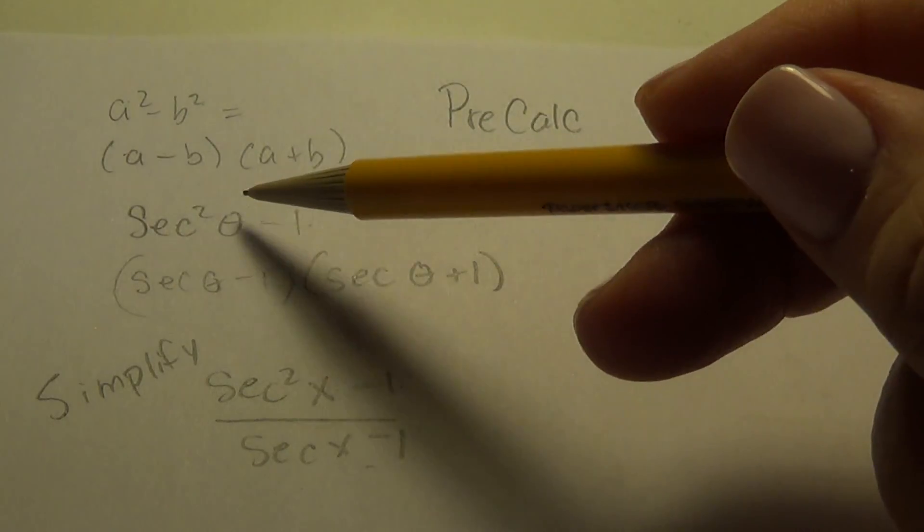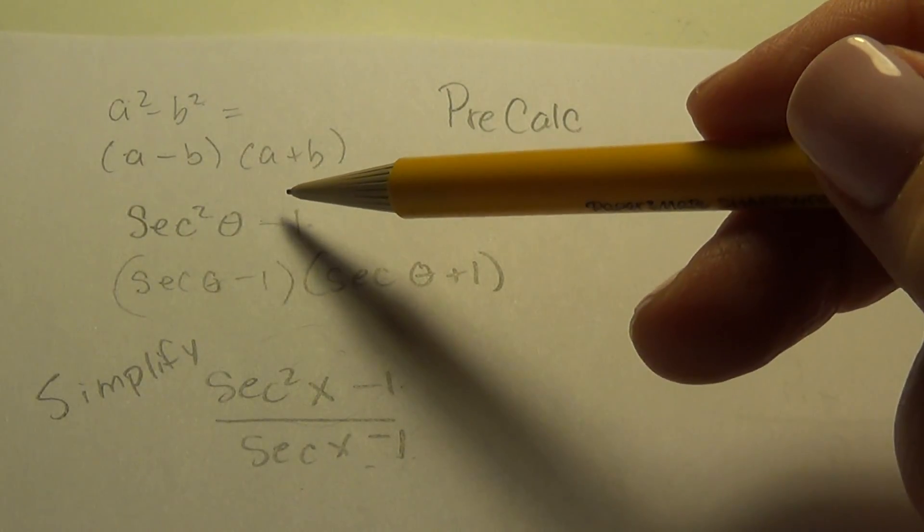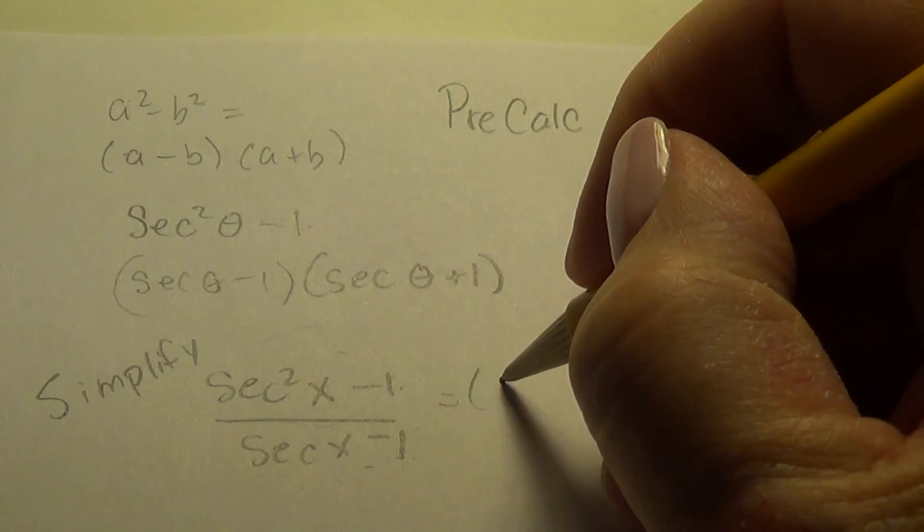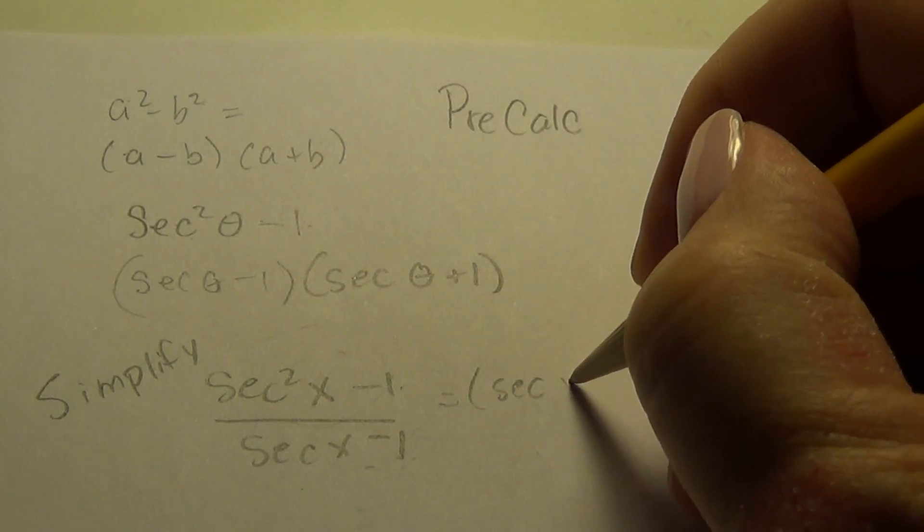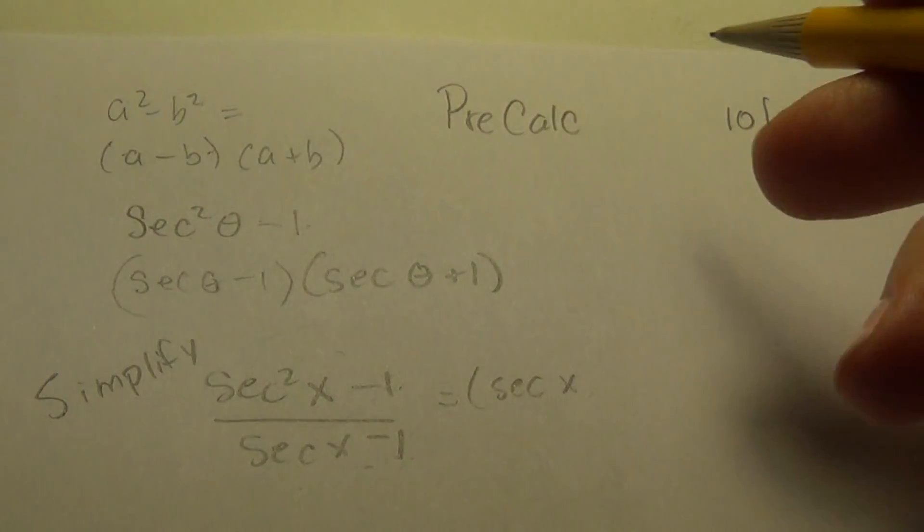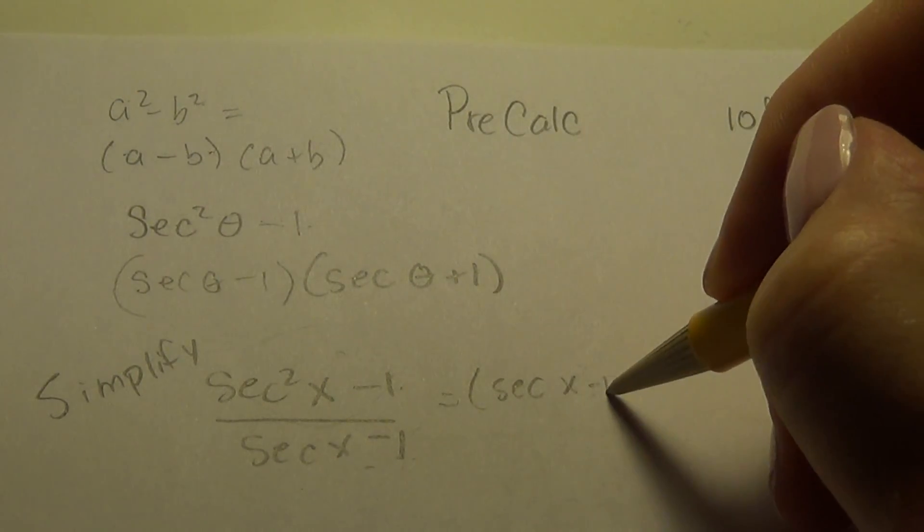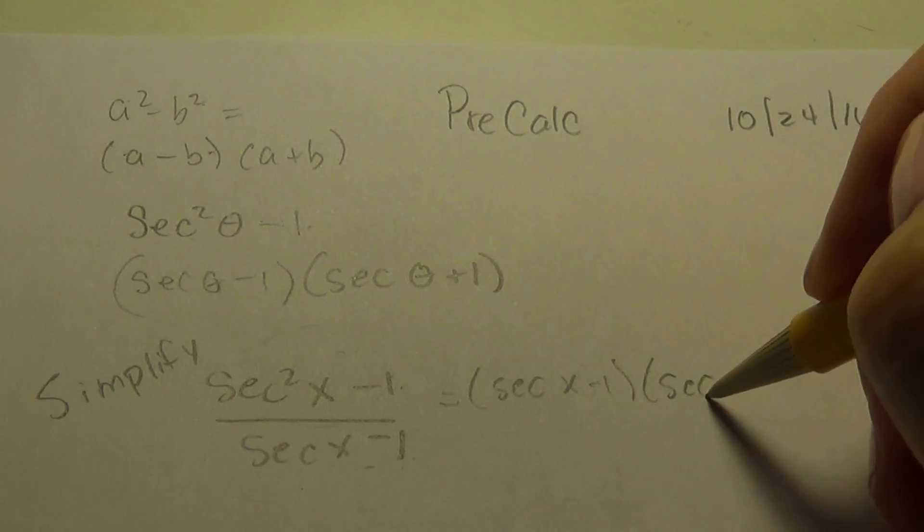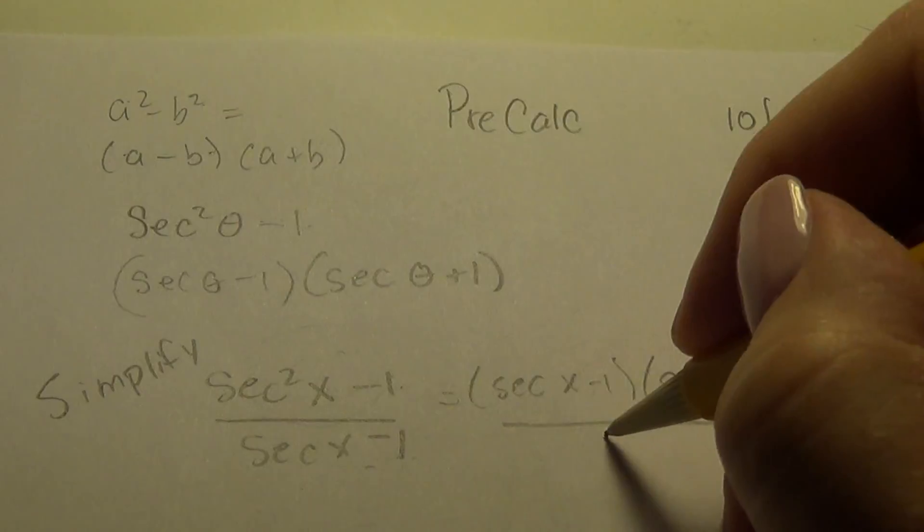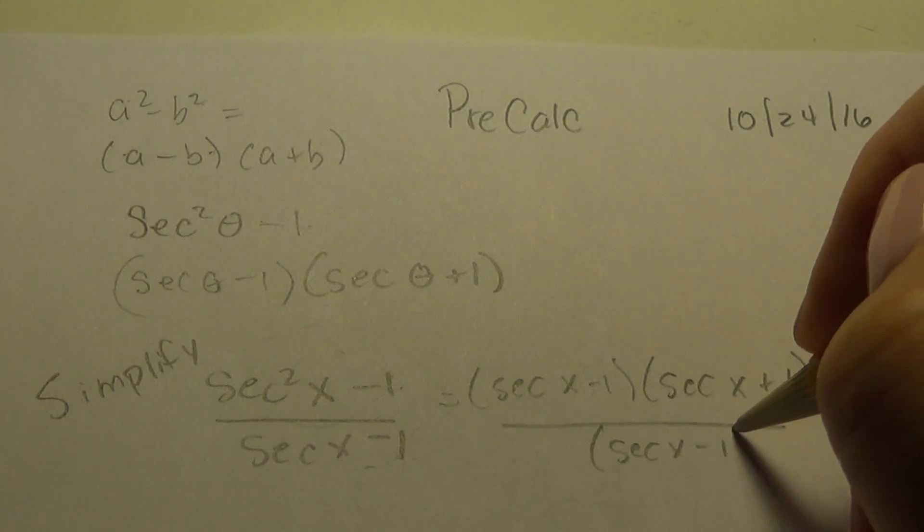So let's look at what we would do. We're going to apply this idea. Secant squared minus one is a difference of two squares. So I'm going to go secant x minus one, sorry, secant x minus one times secant x plus one. And then in the bottom I have a secant x minus one.